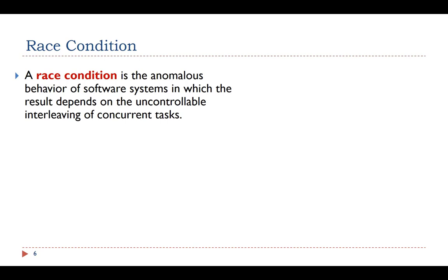A race condition is defined as the anomalous behavior of software systems in which the result depends on the uncontrollable interleaving of concurrent tasks. When two or more tasks manipulate a shared variable concurrently, the result of the execution depends on the particular order in which the manipulation takes place.